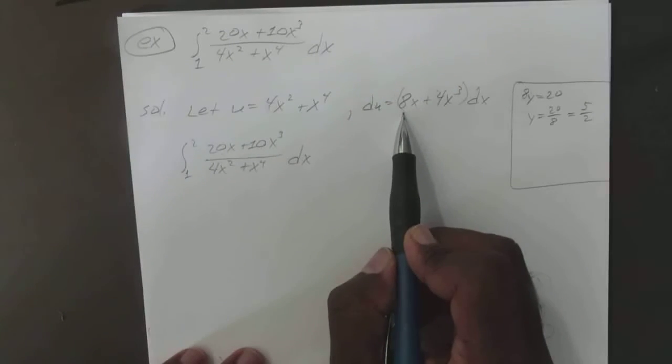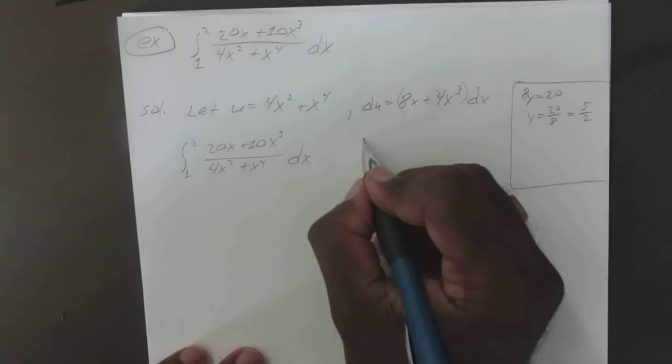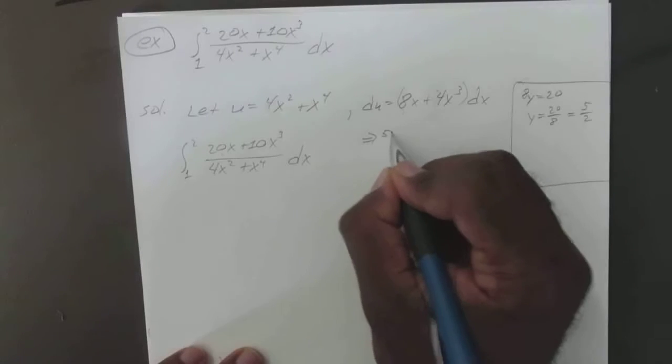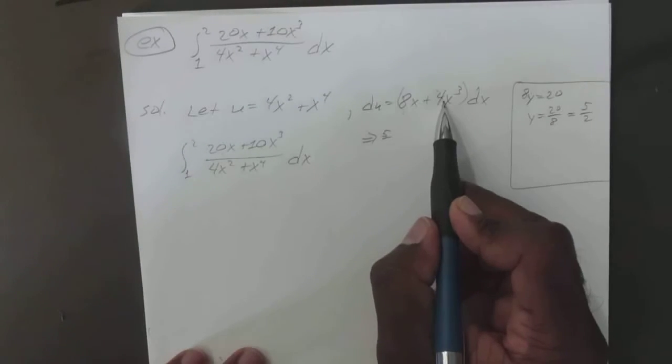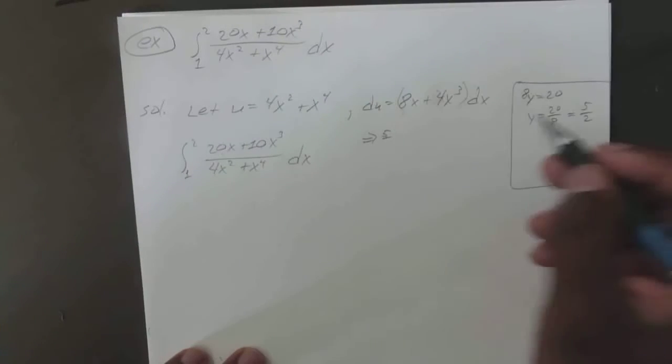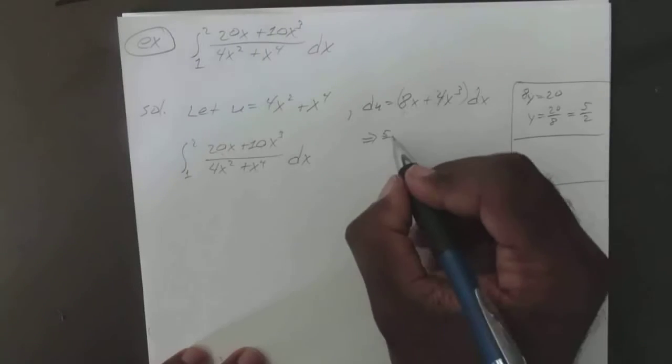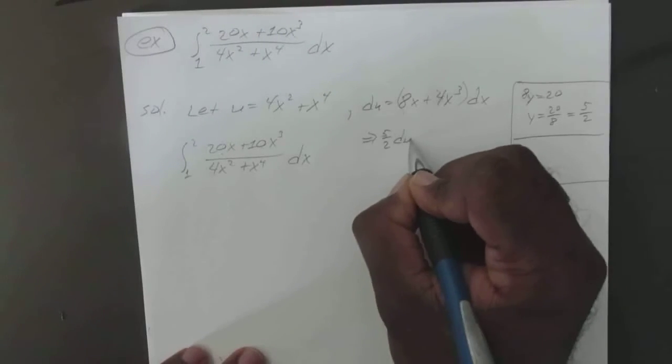So if you multiply this one by 5 over 2, and if you do the same thing for 4 and 10, if you have 5 over 2, you have 20 over 2, which will be the same thing. So you have 5 over 2.